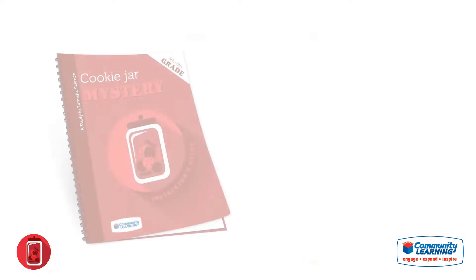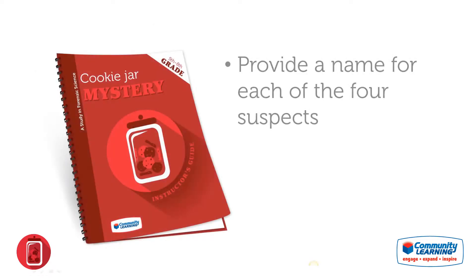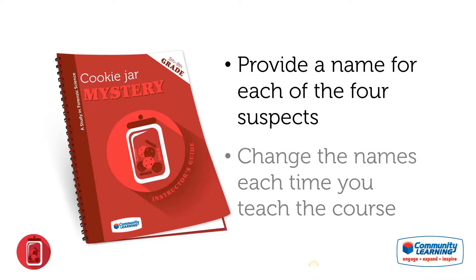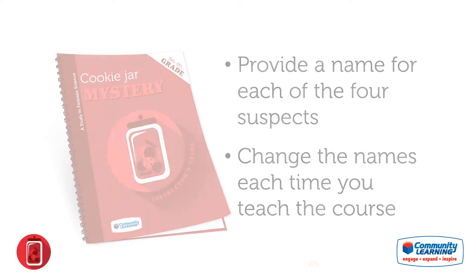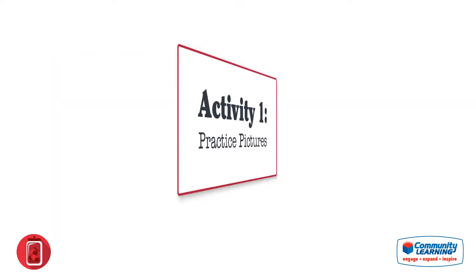Before beginning the Cookie Jar Mystery, you must provide a name for each of the four suspects in the storyline. Suspect names can be changed each time you teach the course, which can be helpful in keeping the ending a secret in each session.